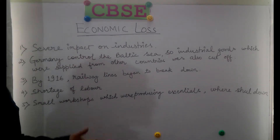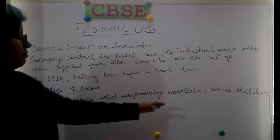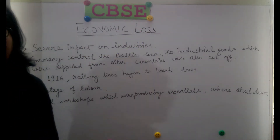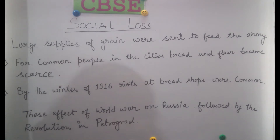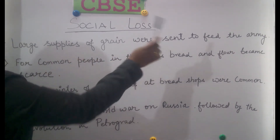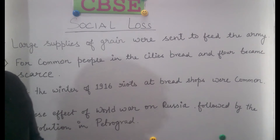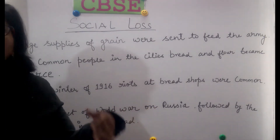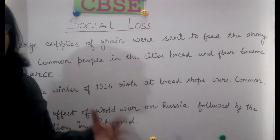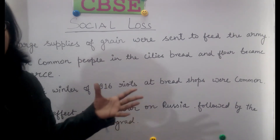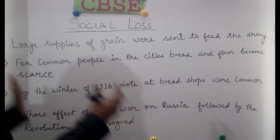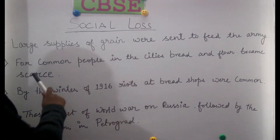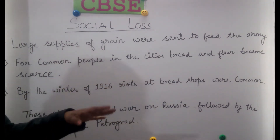This caused a social loss as well. Large supplies of grain were sent to feed the army. Russia had a very large army, and even the physically fit common people were conscripted. As a result, for common people in the cities, bread and salt became scarce.